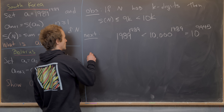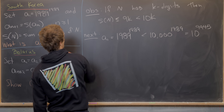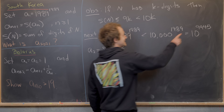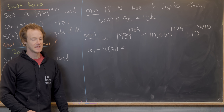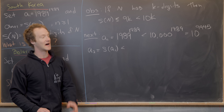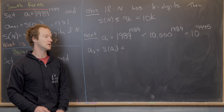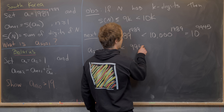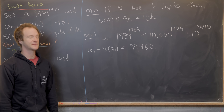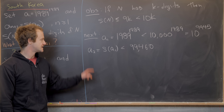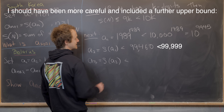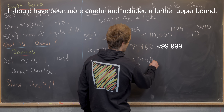Now we can start applying our sum-of-digits formula. A₁ = 1989^{1989}, so A₂, which is S(A₁), is less than (9945 + 1) × 10 = 99,460, since 10^{9945} has 9946 total digits. Then using the fact that the sum-of-digits function is weakly decreasing, A₃ = S(A₂) < S(99460). Computing: 9+9+4+6+0 = 28.